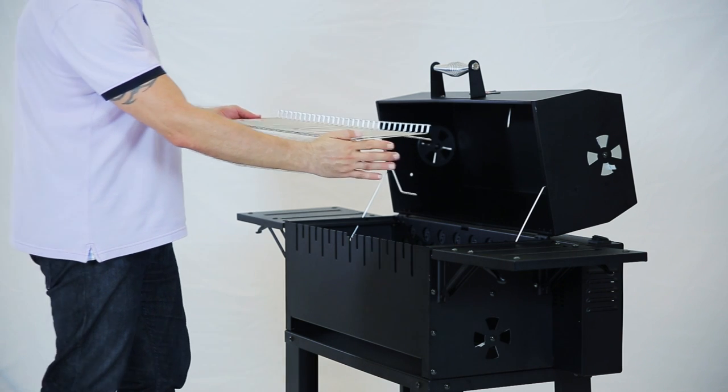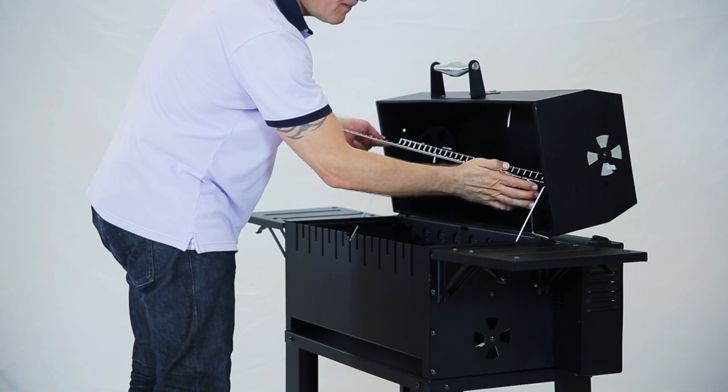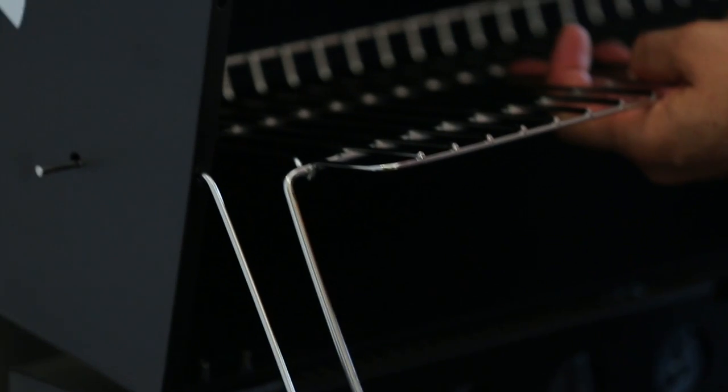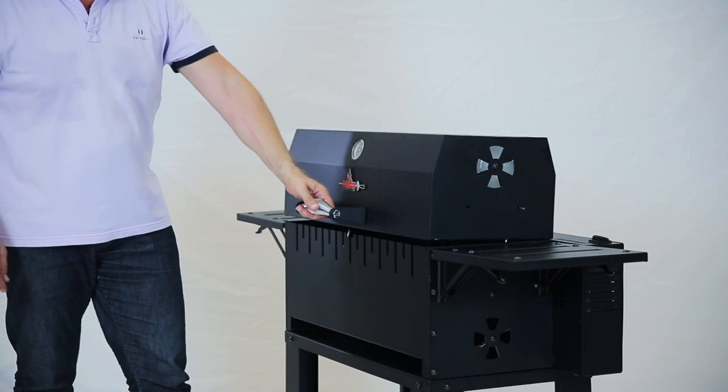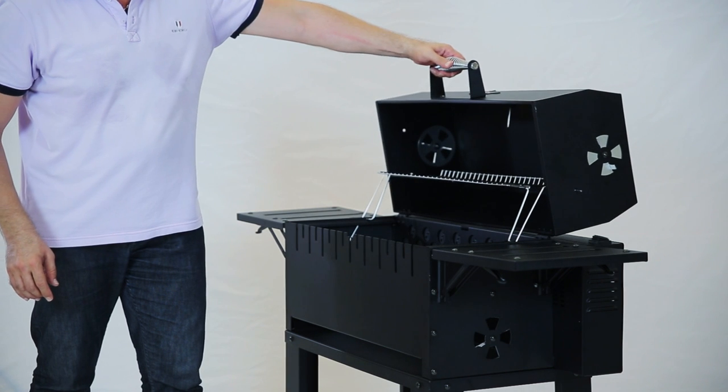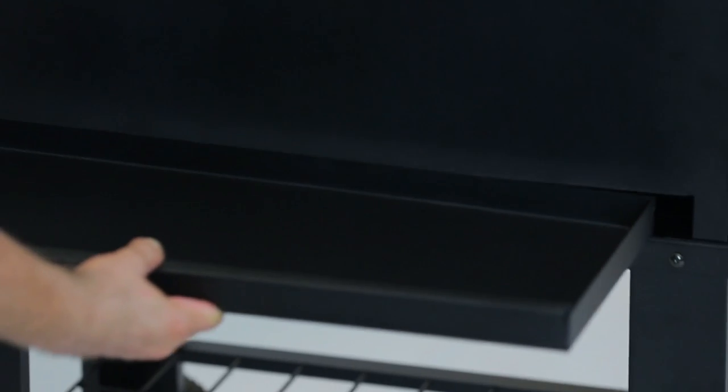Step 17 and 18. For these steps, insert the top shelf into the main body and main lid hole like this, and insert the ashtray.